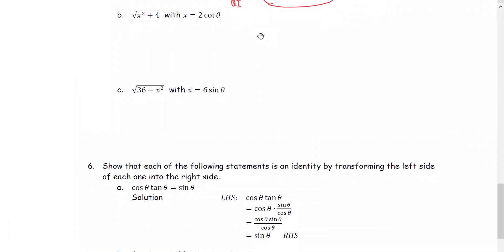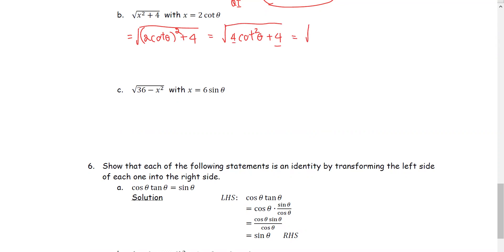Next example, x is 2 times cotangent theta, squared added by 4. Squaring 2 times cotangent theta, we get 4 cotangent squared theta plus 4. We see 4 and 4 as a common factor. Within the radical, we have 4 as a common factor multiplied by cotangent squared theta plus 1. And cotangent squared theta plus 1 is equivalent to cosecant squared theta. Now we have square root of 4 times cosecant squared theta. Taking the square root, we have 2 times cosecant theta.